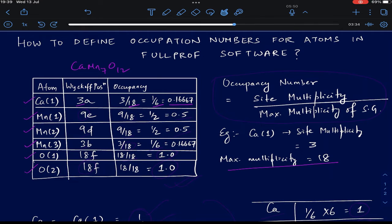Similarly, for Mn1 it will be 9 divided by 18 which gives you 0.5. For Mn2, it is 9 divided by 18 again which gives you 0.5. For Mn3, it is 3 divided by 18 which gives you 1/6. For Oxygen1, it is 18 by 18 which gives you 1. Then for Oxygen2, you get 18 by 18 which is 1.